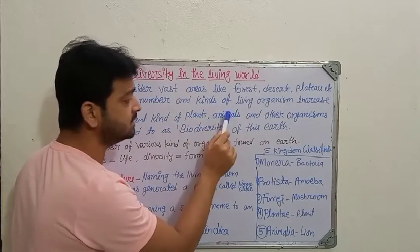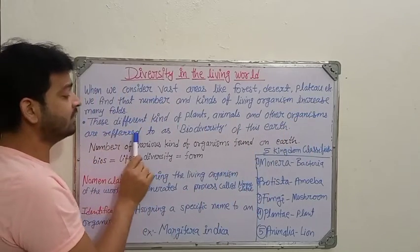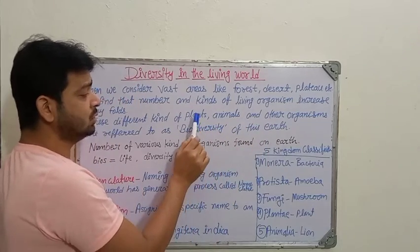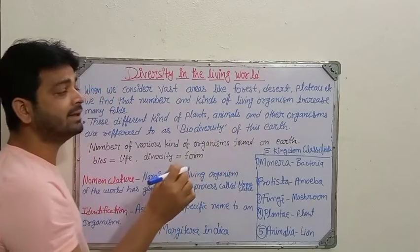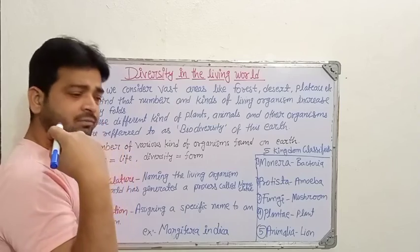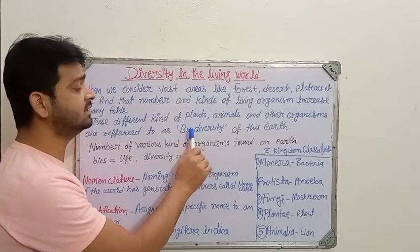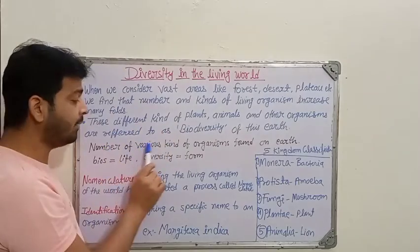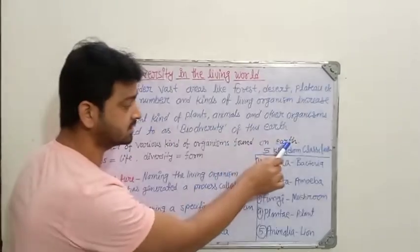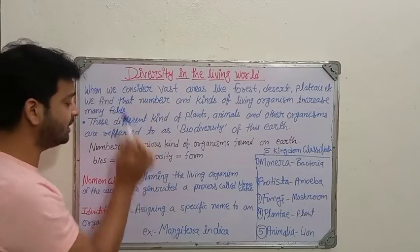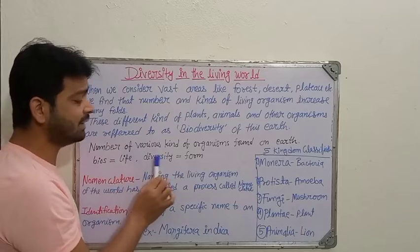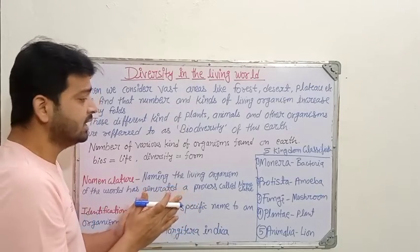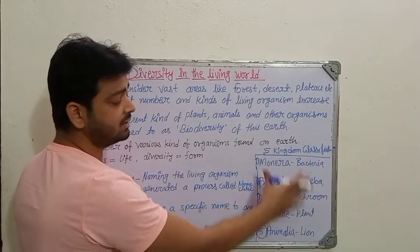These different kinds of plants, animals, and other organisms are referred to as biodiversity of the Earth. Different kingdoms are formed, and within each kingdom there are lots of species and varieties — that is what is called biodiversity. The word 'biodiversity' comes from 'bios' meaning life, and 'diversity' meaning forms — how many forms they are going to have.